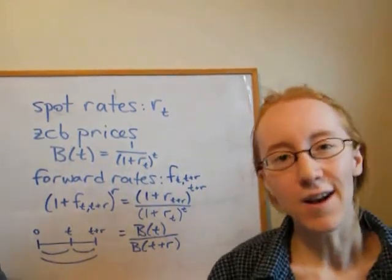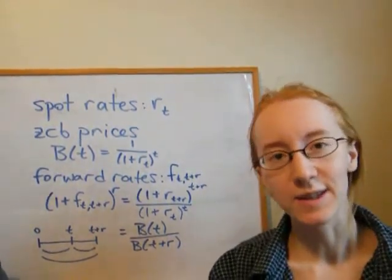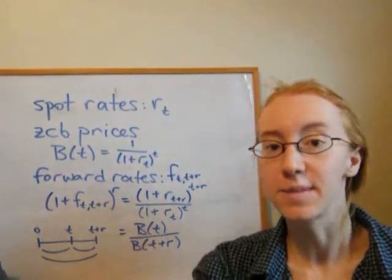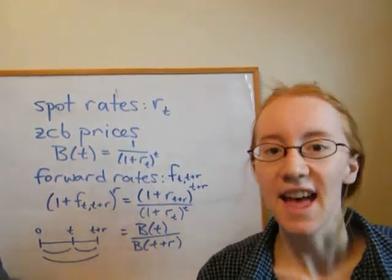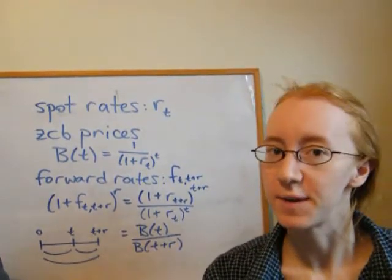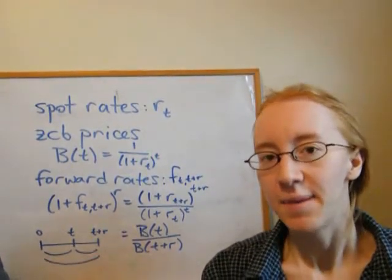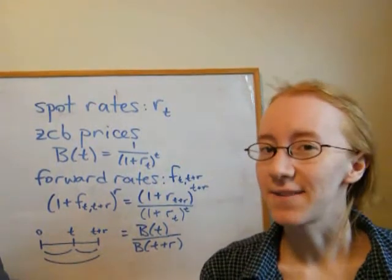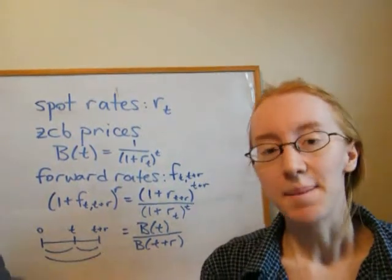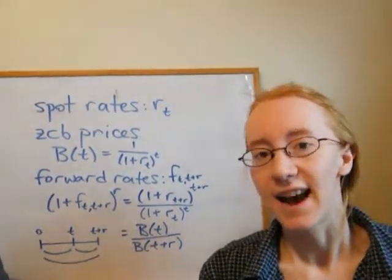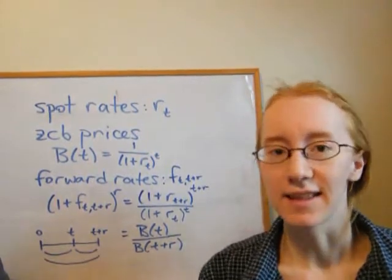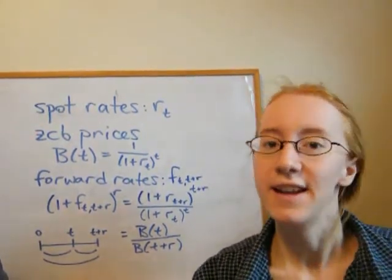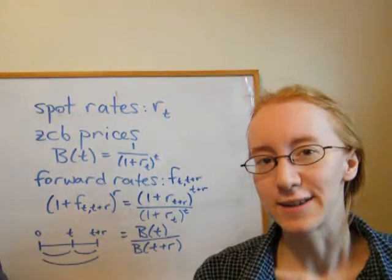So this is neat — all of these rates and bond prices are really closely related to each other. If we know one set of rates, we can determine all the other rates and prices that are consistent under the law of one price. And we looked at an example where if the law of one price doesn't hold, we can actually take advantage of that by buying the thing that's cheaper and selling the thing that's more expensive and making some guaranteed profit now without having any obligations in the future.